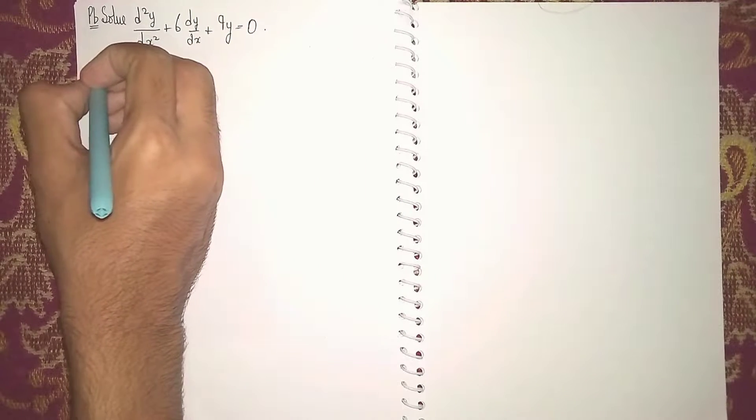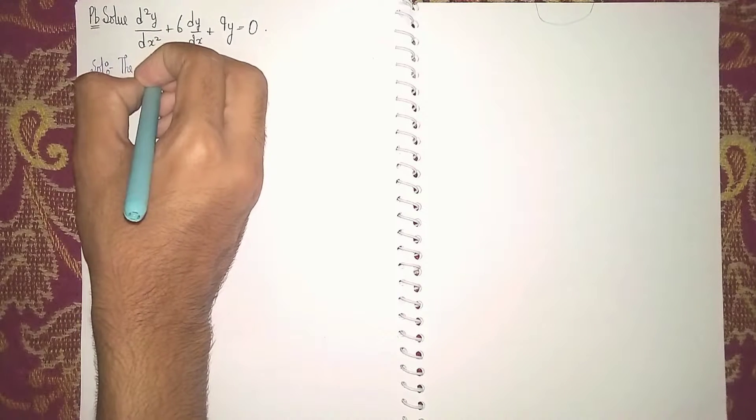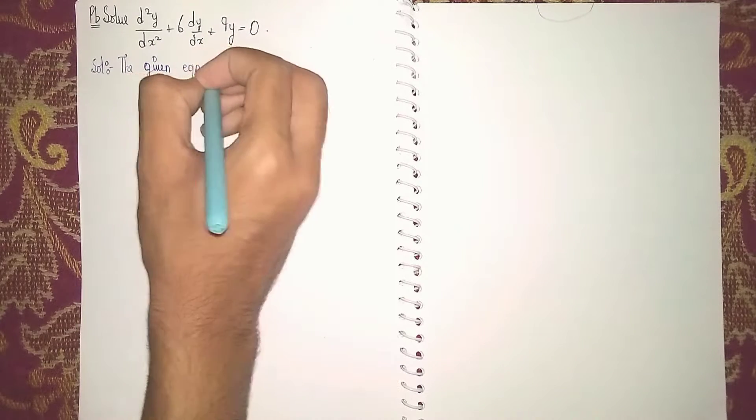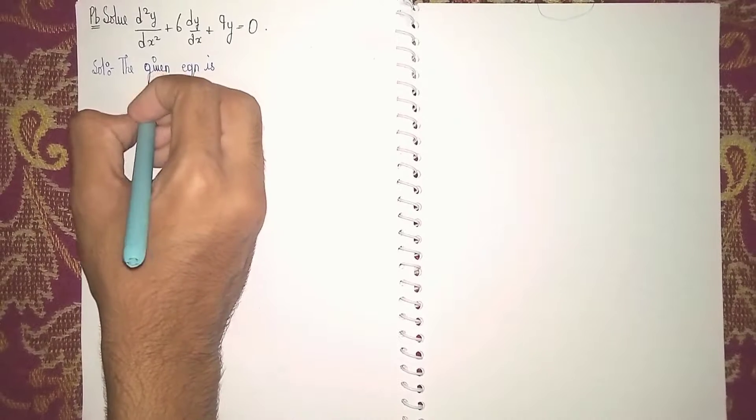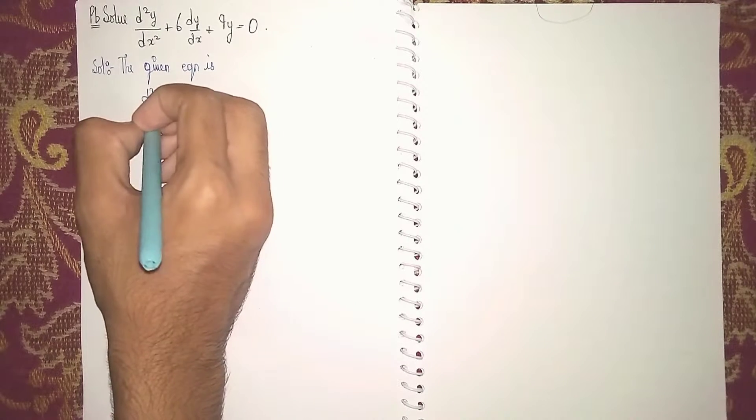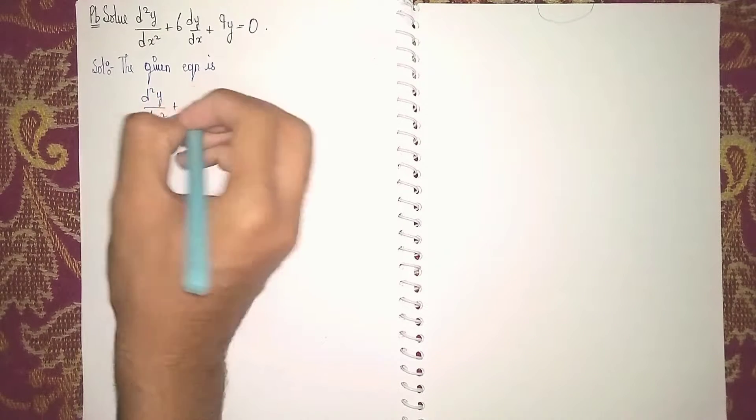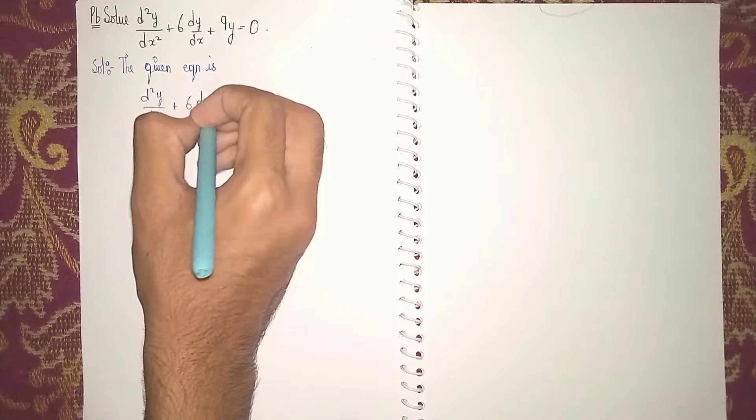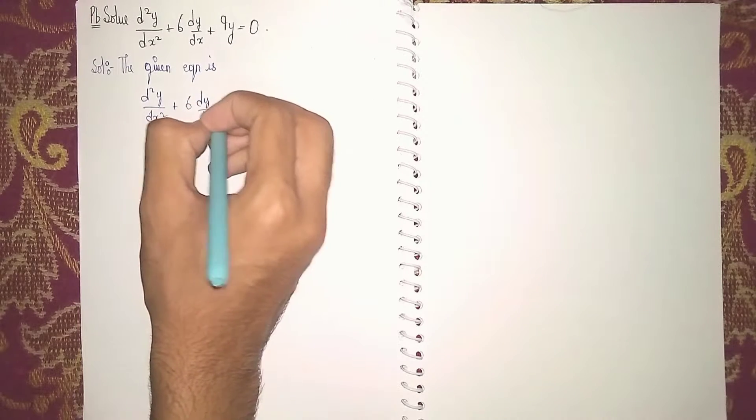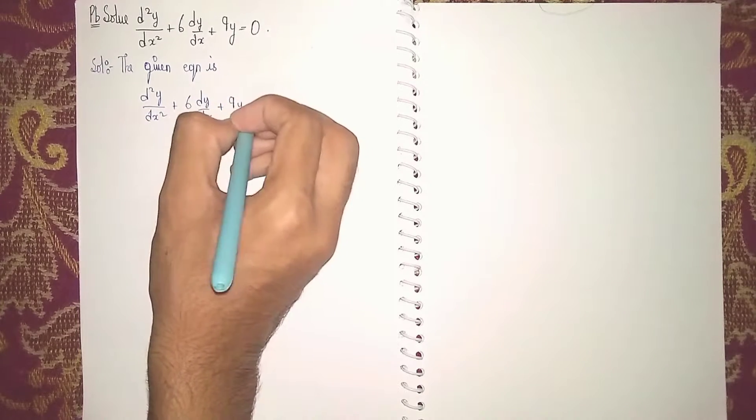So first, the given equation is d²y/dx² + 6(dy/dx) + 9y = 0.